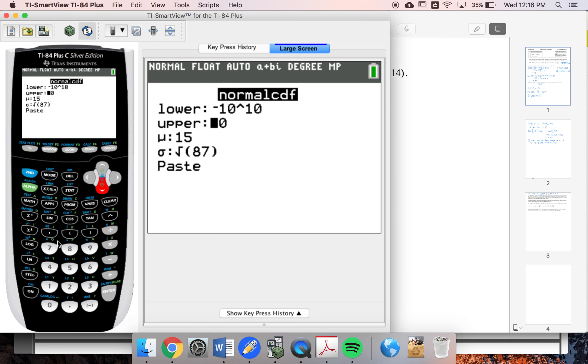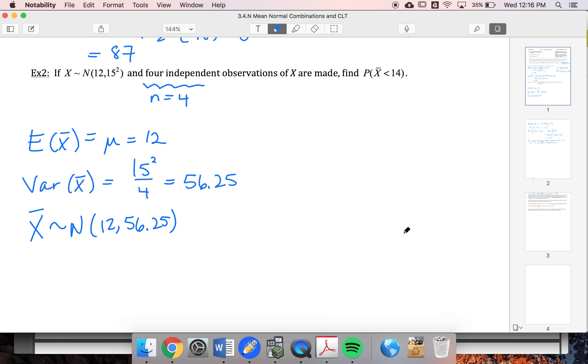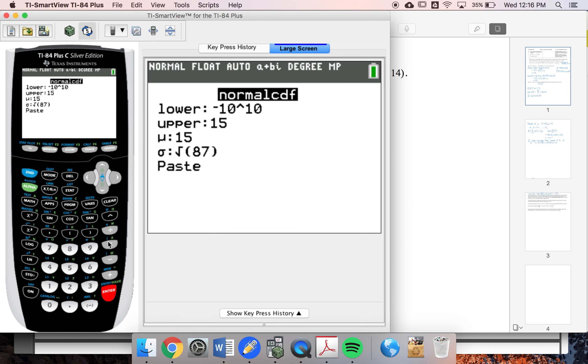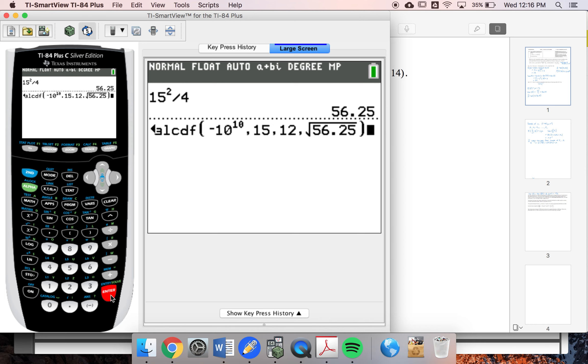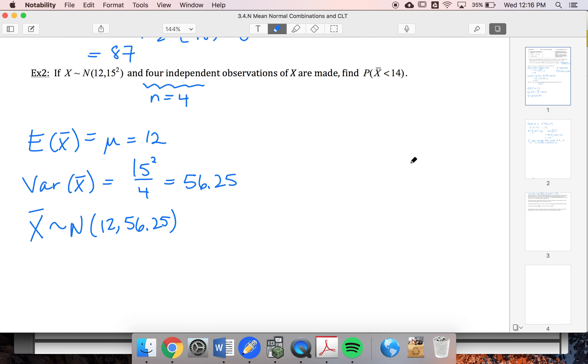That's the same one. 14. Is it 15 again? No, 12 this time. And then square root of 56.25. And I get a probability of 65.5%.